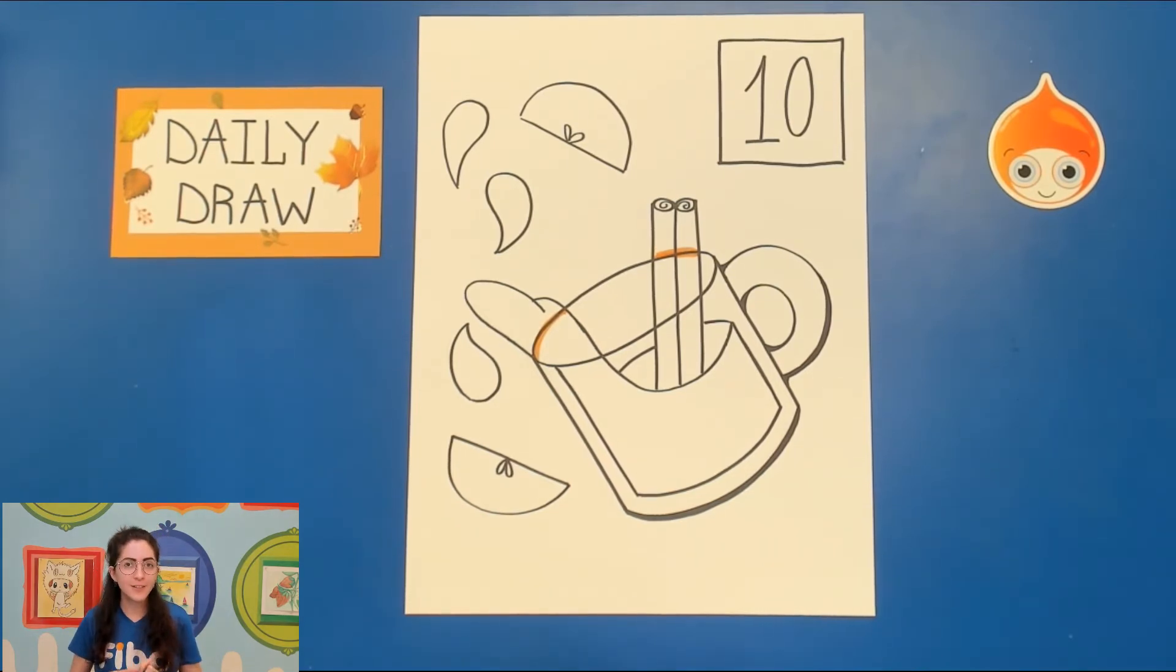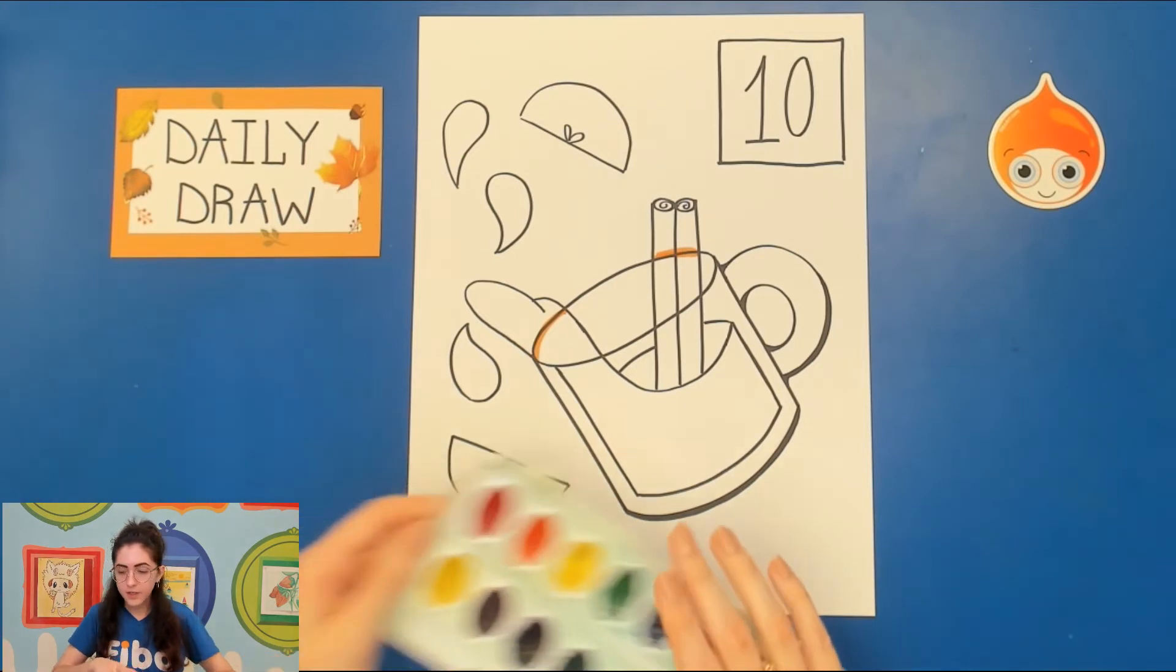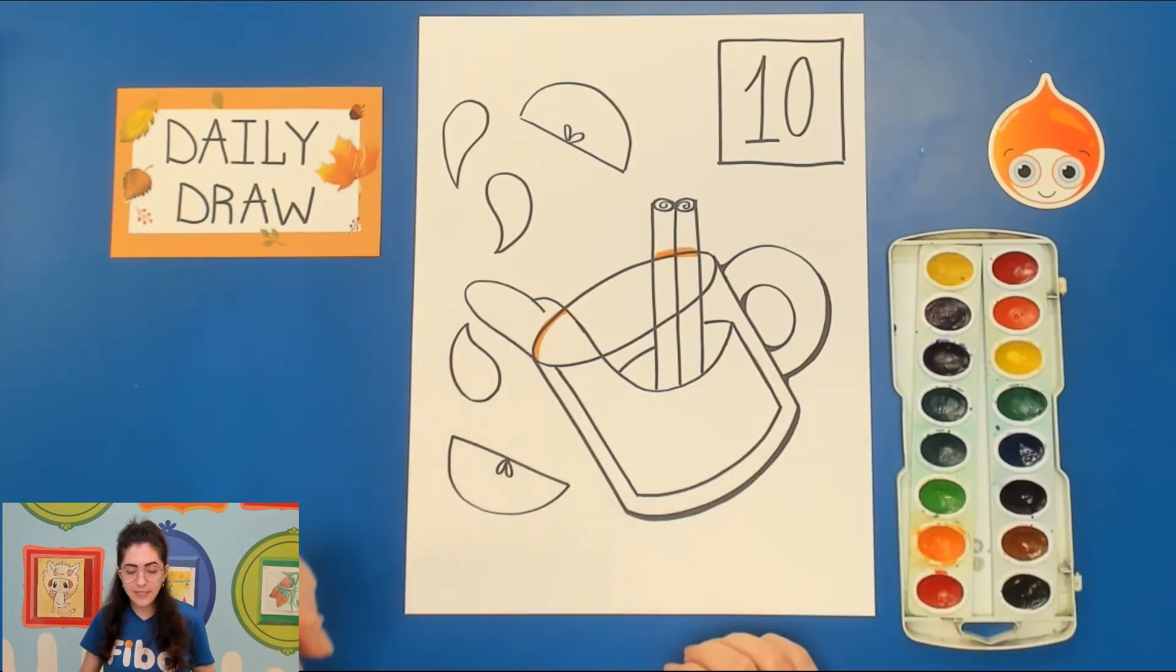I'm now going to go ahead and move into some more coloring. Again you can take your Sharpie and make the numbers super fancy if you'd like to but I'm going to go ahead and show you some of the watercolor for the inside here. Again you can use pencil or marker to fill in the apple slices or the cinnamon stick but definitely we're going to try and use some watercolor on the inside.